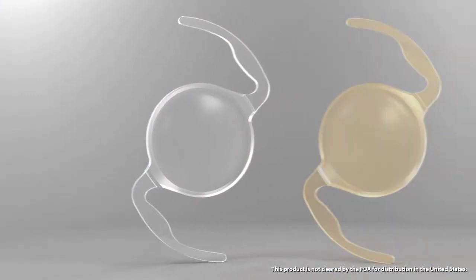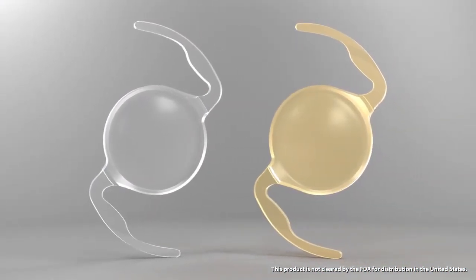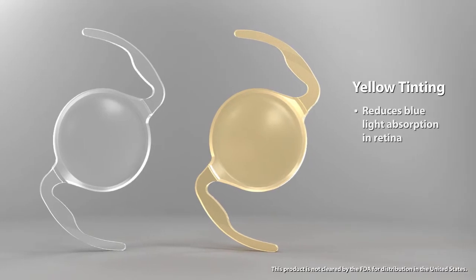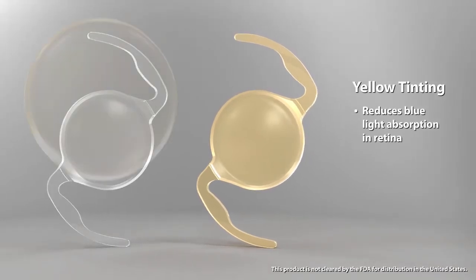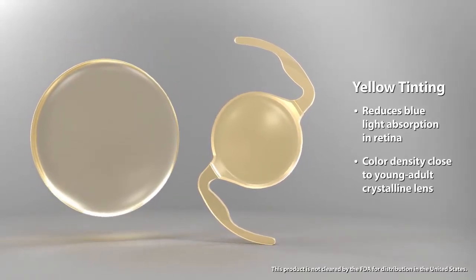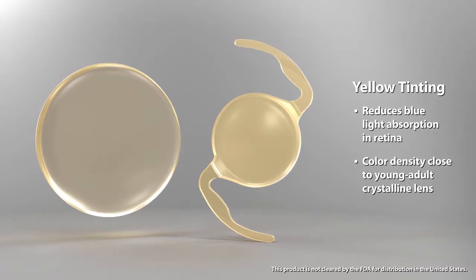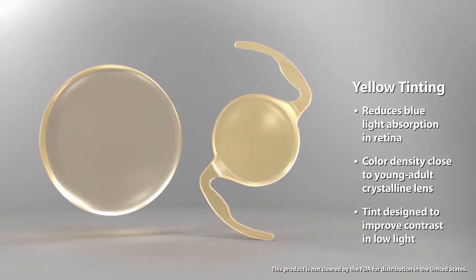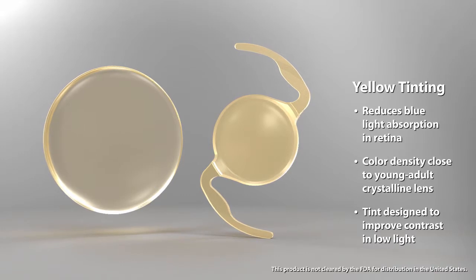Clear and yellow-tinted models of the Actis SP are available. The yellow tint reduces blue light absorption in the retina, and its color density is very close to that of a young adult crystalline lens. The tint is also designed to improve contrast sensitivity in low light.